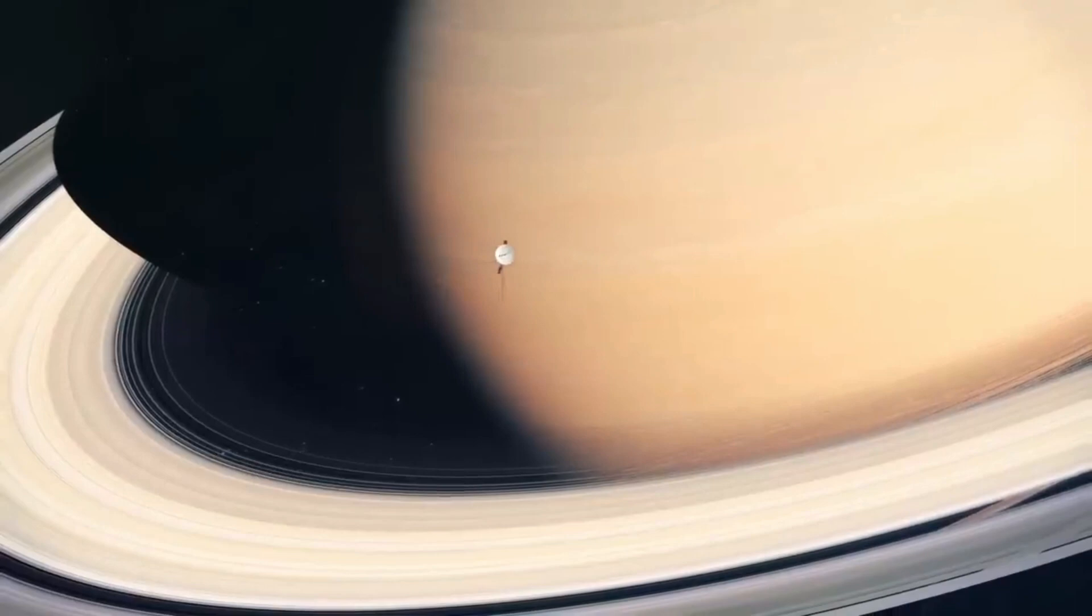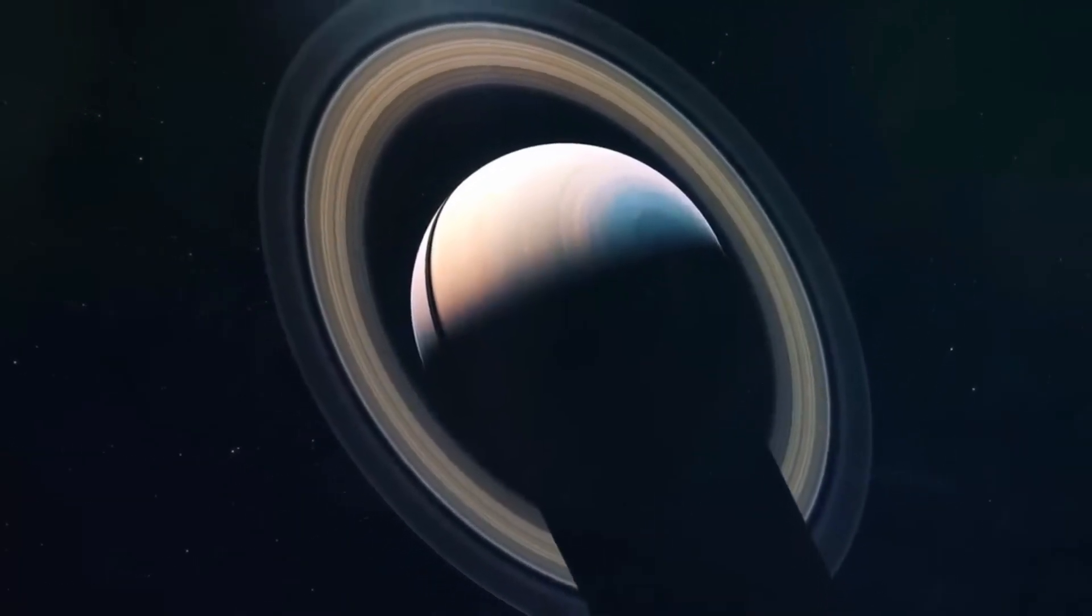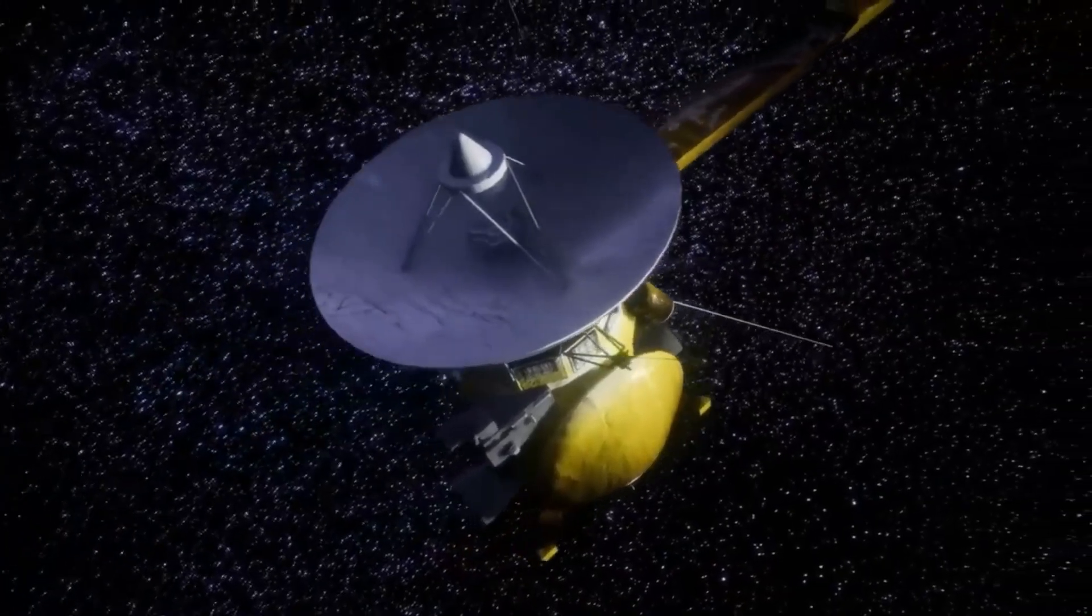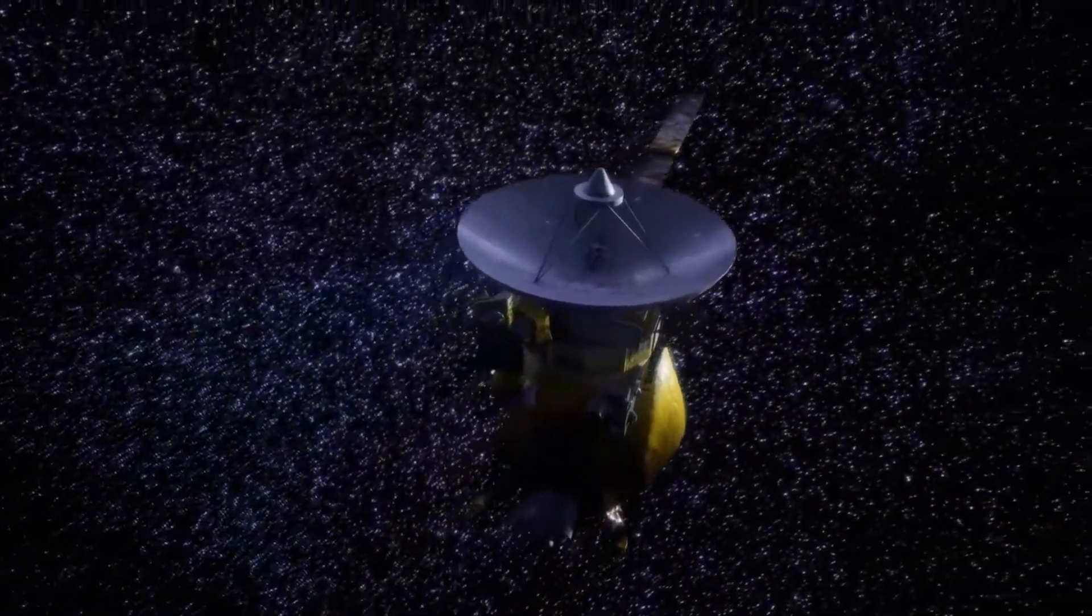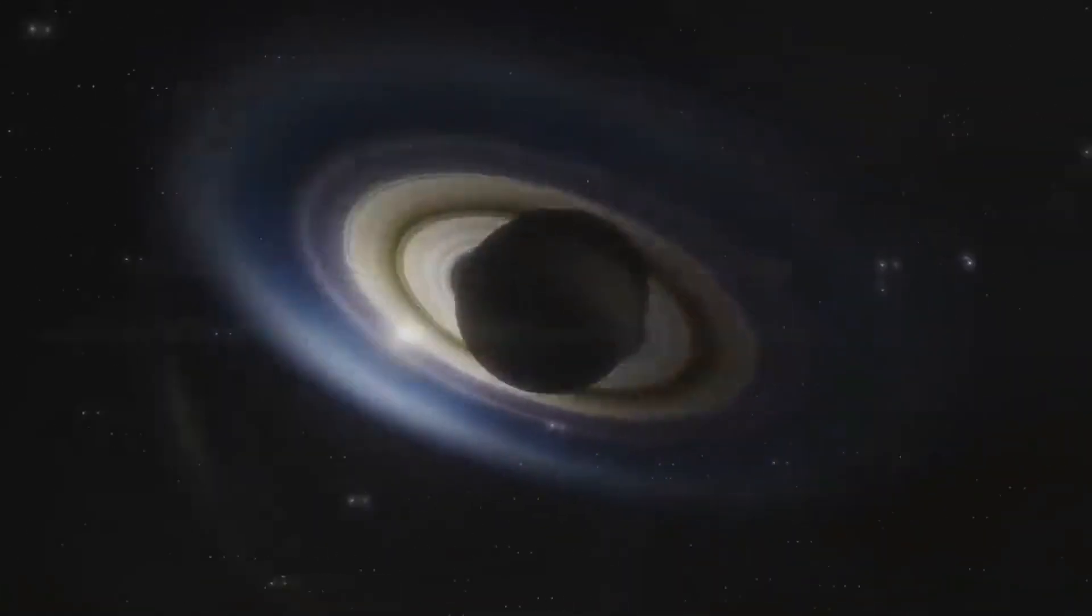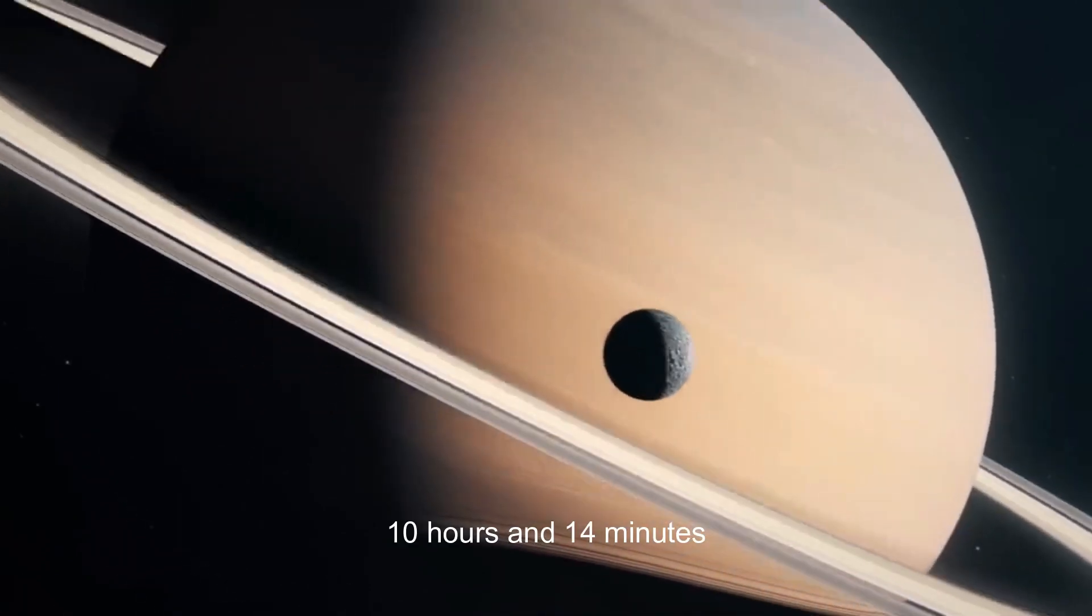Currently Saturn has regained its crown as king of the moons, with a total of 145 moons. Saturn has returned to the planet with the largest number of satellites in the solar system. A year on Saturn lasts about 29.4 Earth years and the rotation takes about 10 hours and 14 minutes.